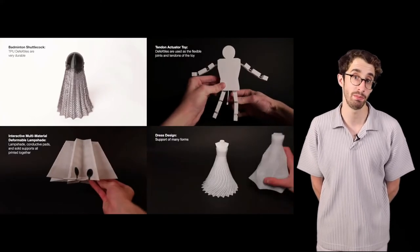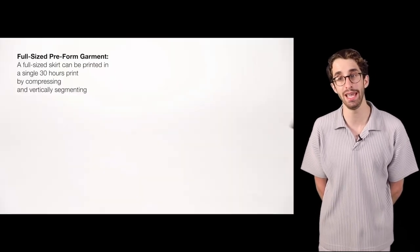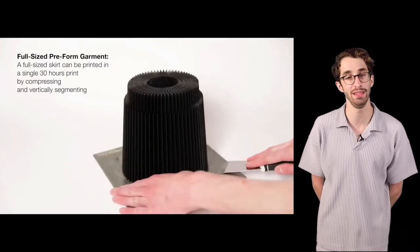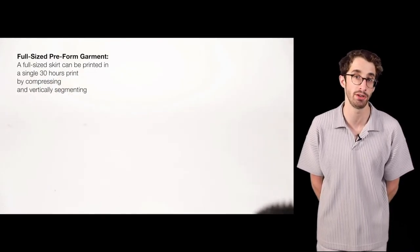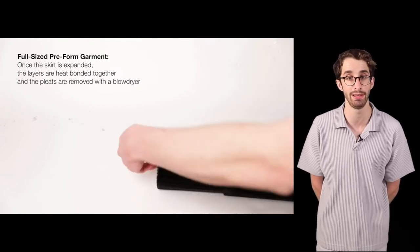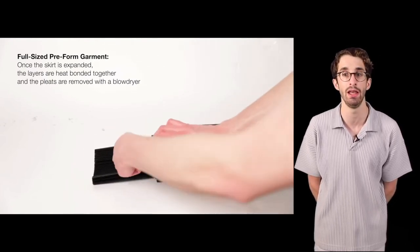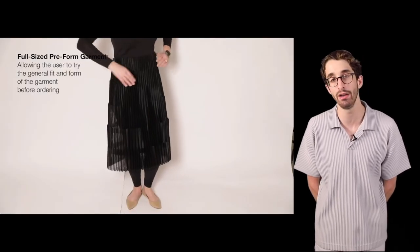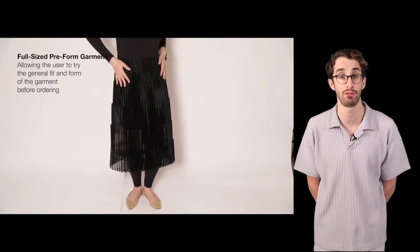We combine the shape complexity with the scale for full-size try-ons. In this case, a skirt is segmented and compressed to fit within the printer, and then once printed after 36 hours, it's removed, expanded, heat-bonded, and deep-pleated, which allows the users to try on a pre-form of the garment and check for a general fit.